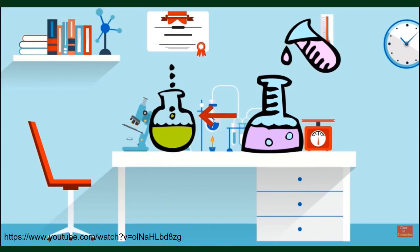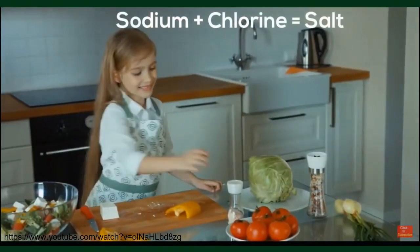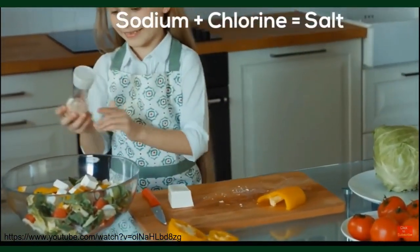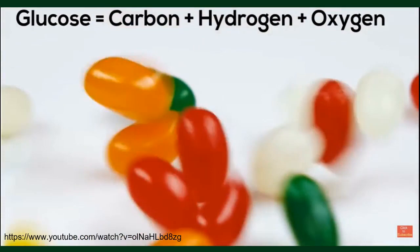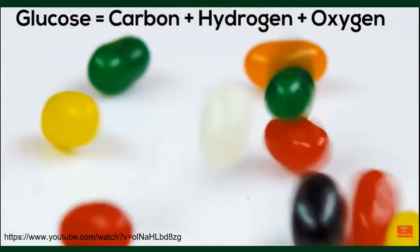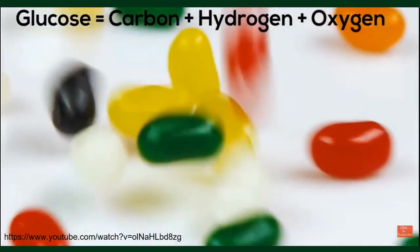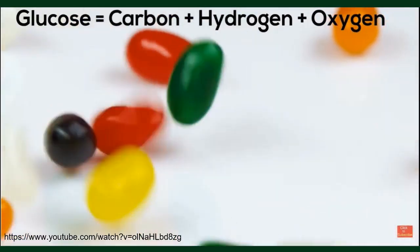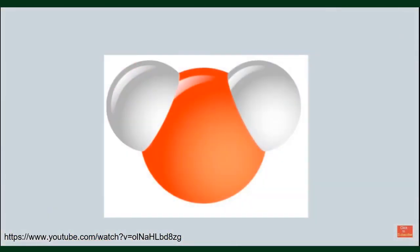Hydrogen and oxygen are gases, but they combine to make liquid water. Table salt is sodium and chlorine. Glucose, a type of sugar, is made of carbon, hydrogen, and oxygen. When elements create a compound, they always join in a specific ratio. The ratio of water is two hydrogen to one oxygen. If a compound has a different ratio of hydrogen to oxygen, then it is not water.